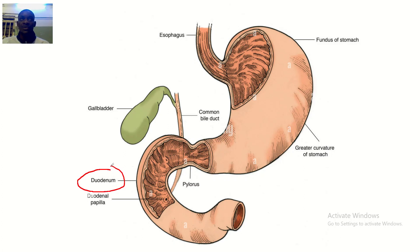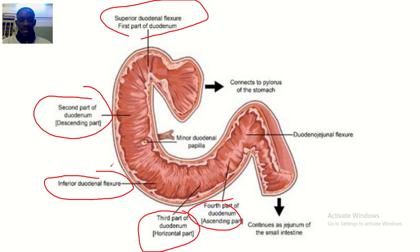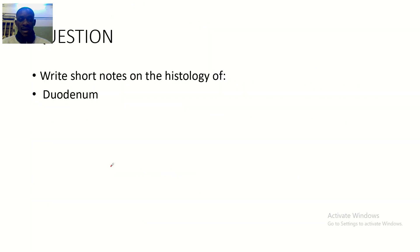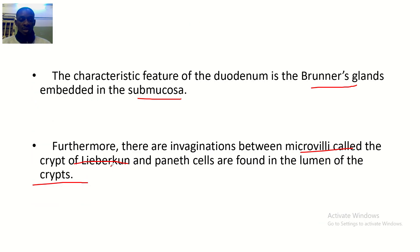That's the histology of the duodenum. We covered the various layers: mucosa, submucosa, muscularis, and serosa, as well as the epithelium and cells found in each layer. Histology of the duodenum — done and dusted.